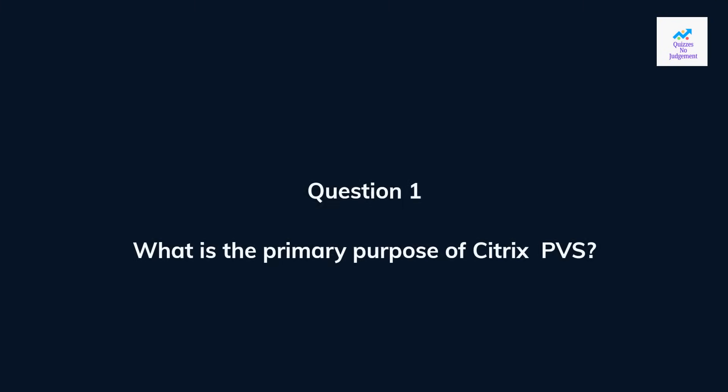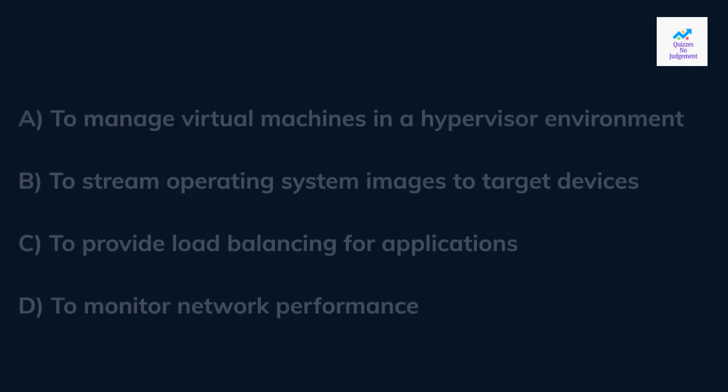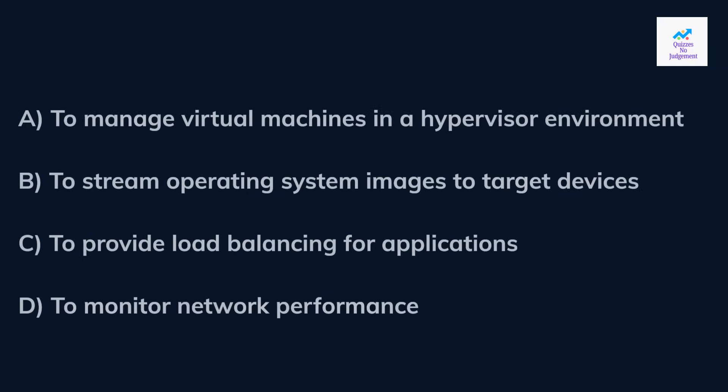Question 1. What is the primary purpose of Citrix PVS? A. To manage virtual machines in a hypervisor environment. B. To stream operating system images to target devices. C. To provide load balancing for applications. D. To monitor network performance.